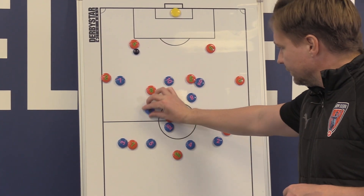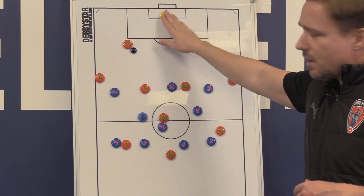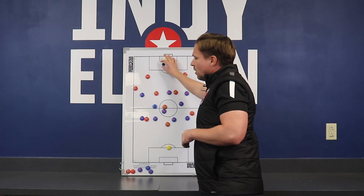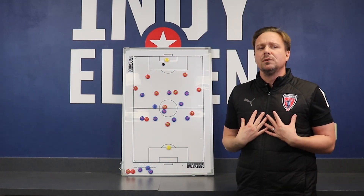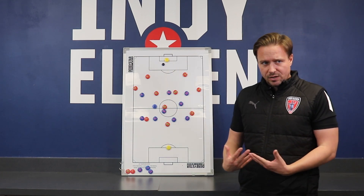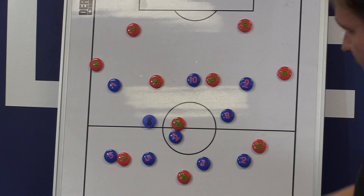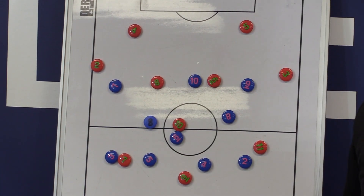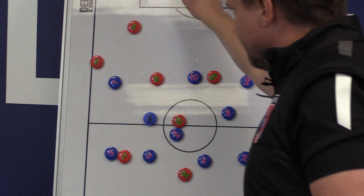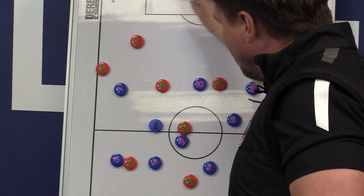Another moment of when to go high press — which is one of my favourites — is any time the ball goes back to the opposition goalkeeper. This is a great moment when you can get your team into the attacking half of the field and start to establish that territorial dominance. We don't necessarily have the ball, but if we can get players into the attacking half of the field, we can start putting them under pressure and asserting ourselves on the opposition. So a great time to go and step up and press together is when they play back to the goalie.